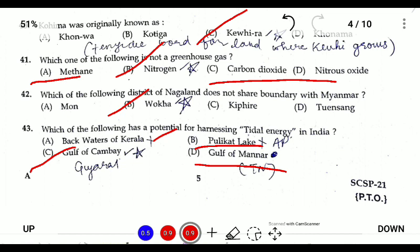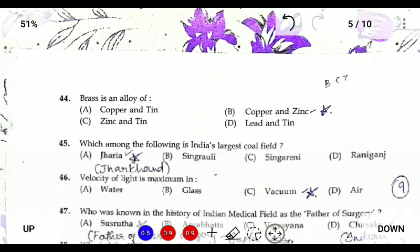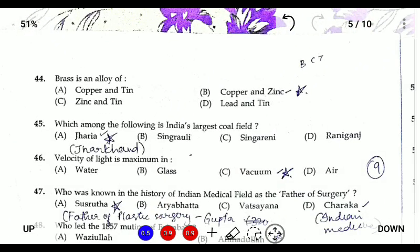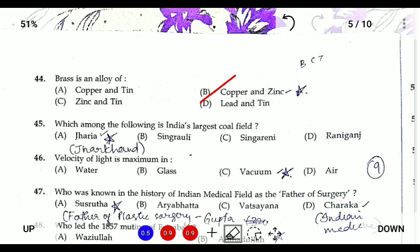Question forty-four: Brass is an alloy of copper and zinc. There is a common confusion between brass and bronze — bronze is an alloy of copper and tin, whereas brass is copper and zinc.